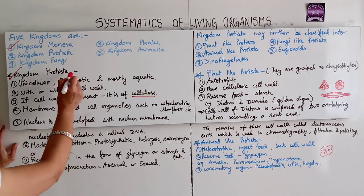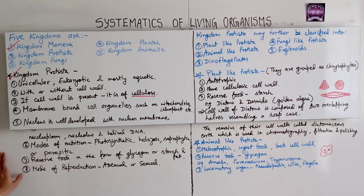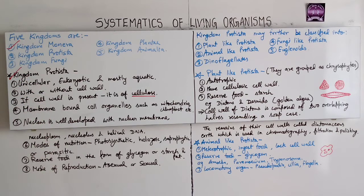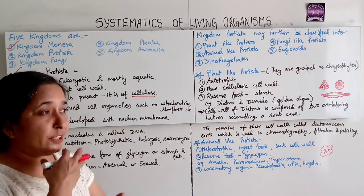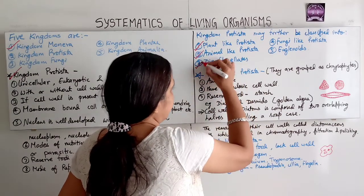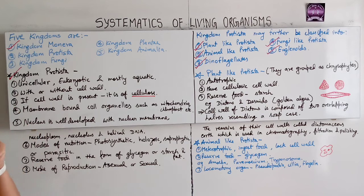Mode of nutrition in Protista is photosynthetic, holozoic, saprophytic, or parasitic. Reserve food is in the form of glycogen, starch, or fat. Mode of reproduction is asexual or sexual. Kingdom Protista may be further classified into plant-like Protista, animal-like Protista, dinoflagellates, fungi-like Protista, and euglenoids.